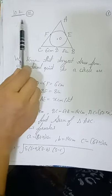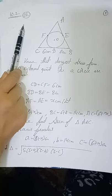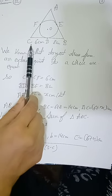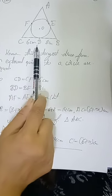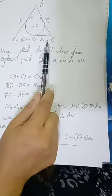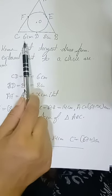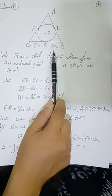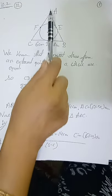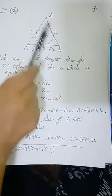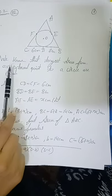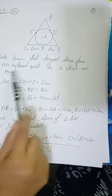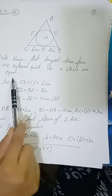This is question 10.2, question number 12. In this question, given point D divides the line segment BC in two parts, 6 cm and 8 cm, and find the other two sides AC and AB. We know that tangents drawn from an external point to a circle are equal.